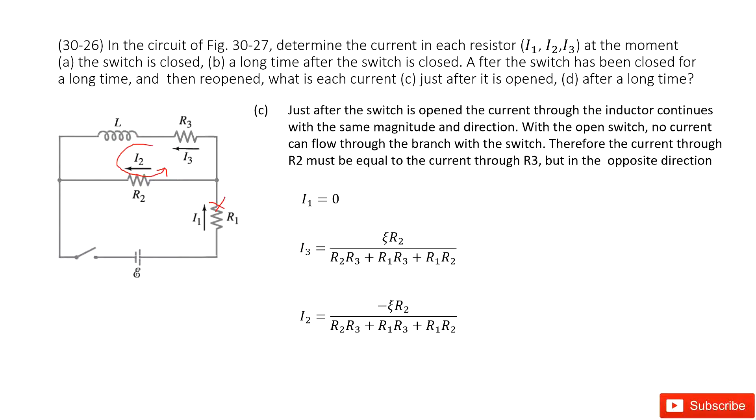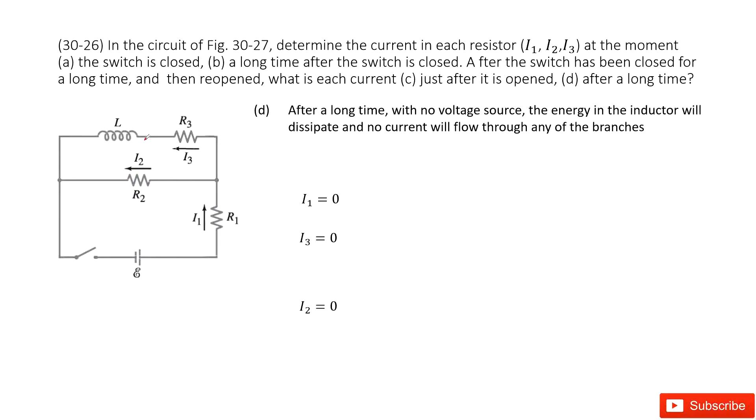The part D, after a long time. Of course, after a long time we can see the current just in this inductor will decay. And finally, it will decay to zero. And then we can see I1, I2, I3 becomes zero. Thank you.